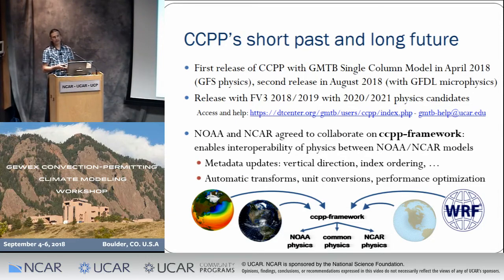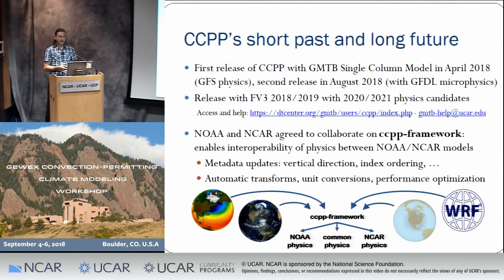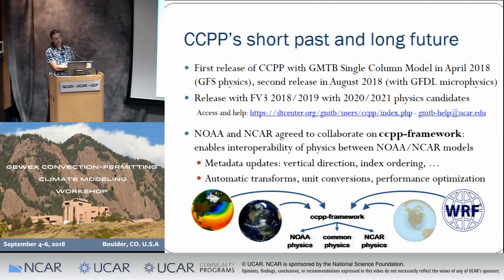There are also derived variables — wherever there is a standard way to convert something, like calculating relative humidity from specific humidity and temperature, this can be automated so no one has to worry about whether their scheme uses specific humidity or relative humidity. In my vision, we'll have all these models talk to the framework, and underneath there will be different pools of physics: a NOAA-supported pool, an NCAR-supported pool, and hopefully a common pool where we use exactly the same version of a scheme — rather than ending up with 17 different versions of the RRTMG scheme, as is the case right now. Thanks for your attention.